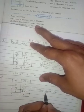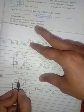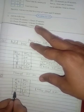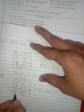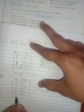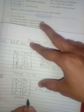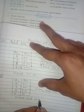So we carry forward 1 hour to the hours column. 3 plus 4 is 7 hours, plus 1 is 8 hours. So what is the time? 8 hours and 10 minutes.